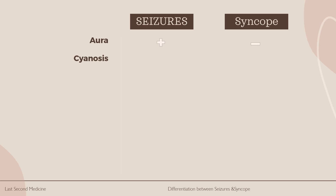Number 2: Was there cyanosis during the event? If cyanosis was noticed during the event, it again favors seizures.